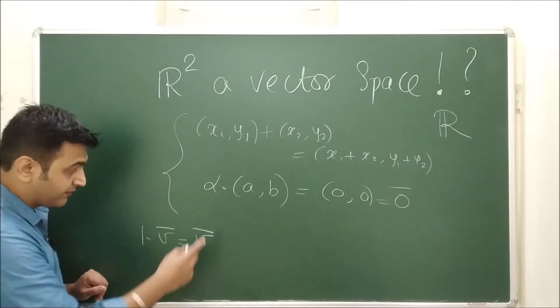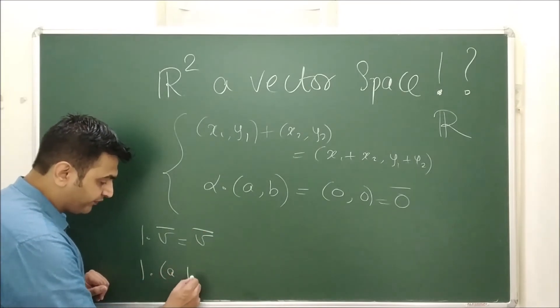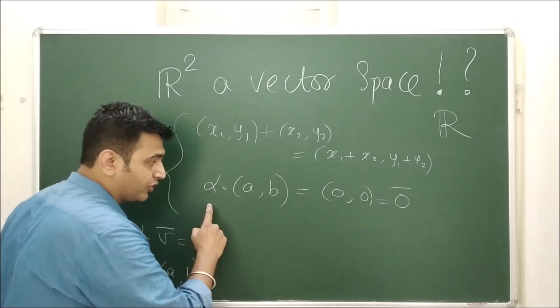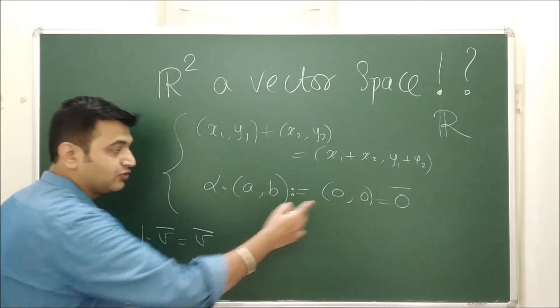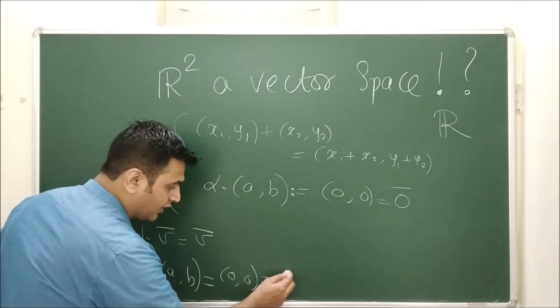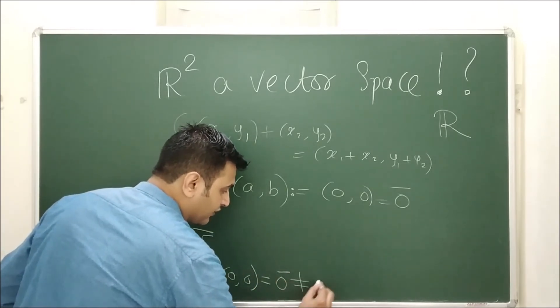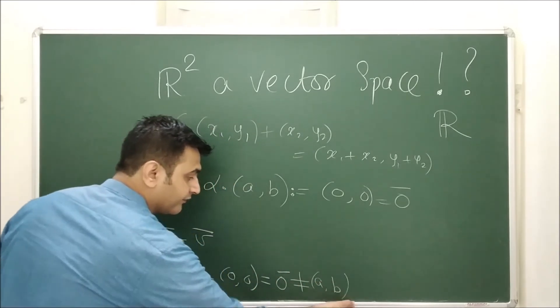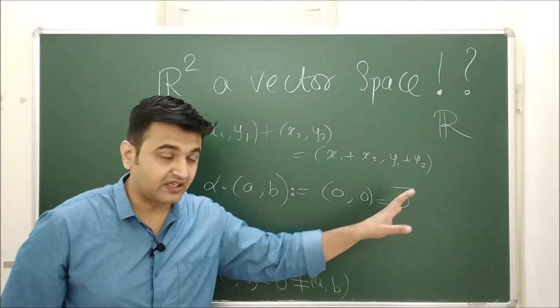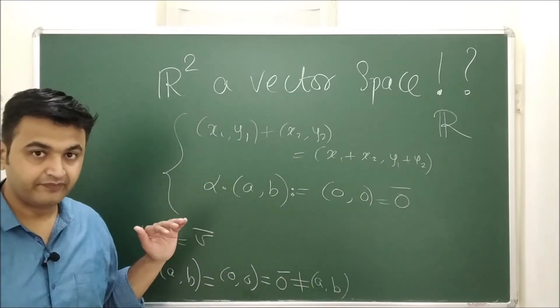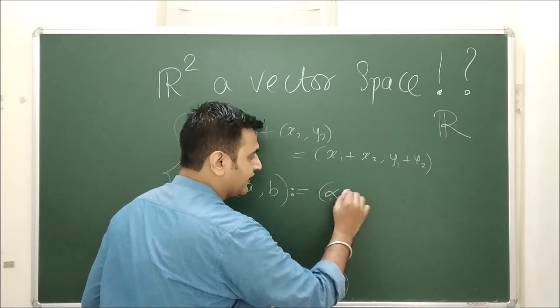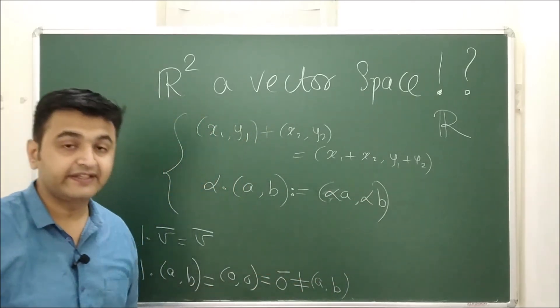If you recall one of the properties of vector space, it is what? 1 into v should be the v itself. But by the definition, you take any vector (a,b), what is the operation I am defining? You take a scalar, you take a vector, product I am defining as the zero vector. So 1·(a,b) is nothing but (0,0). So if my (a,b) is nonzero, then this is not equal to (a,b). So this property gets failed. So R² is not a vector space over R under this operation. But again, if you define the usual operation, which is nothing but (αa, αb), then yes, indeed it does form a vector space over R.